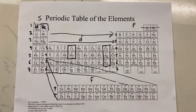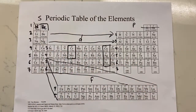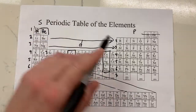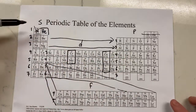All right, so welcome to Chapter 8, Lecture B. If you remember, this is what our periodic table looks like. You have to label S, then P, then D, then F.